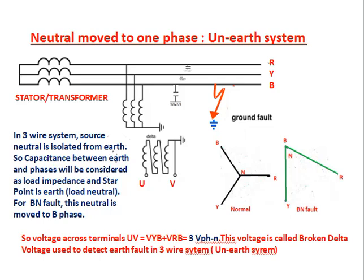In an unearthed system, the neutral moves to one phase. One side of the stator winding is shorted together but not connected to earth — the neutral is isolated. In a 3-wire system, capacitance between earth and each phase is considered as load impedance. For a BN fault, the neutral moves to the B phase. The voltage across terminal UV equals Vyv + Vrb = 3 times the phase-to-neutral voltage. This is called the broken delta voltage, used to detect earth faults in unearthed (3-wire) systems.